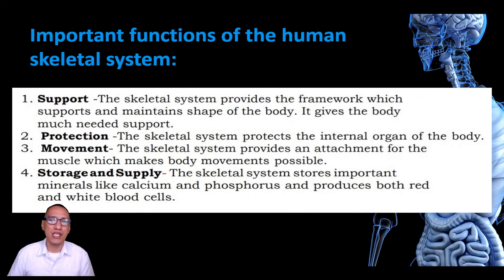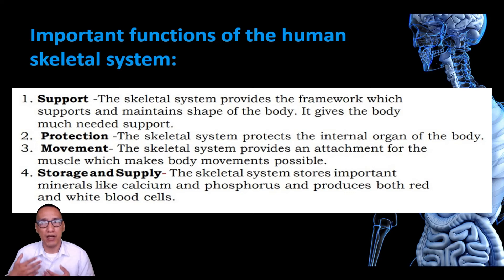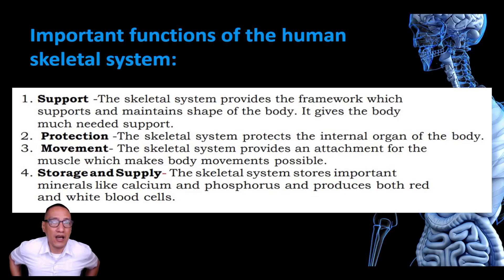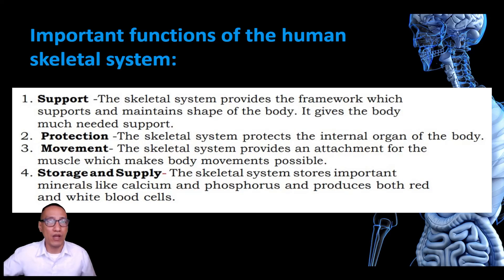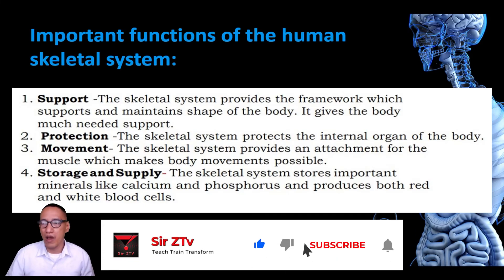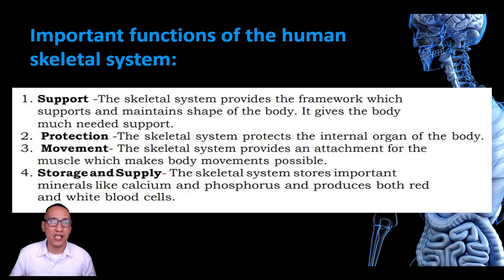Important functions of the human skeletal system: ito ay tumutulong sa atin sa pagsuporta, protection ng ating mga internal organs na maseselan — tulad ng brain, heart, lungs, at kahit yung kidney ay nakapasok sa loob ng rib cage. Movement — kung walang buto, hindi tayo makakagalaw. At storage and supply — doon natatago ang mga importanteng minerals katulad ng calcium at phosphorus, at doon din produced ang red and white blood cells na nagsu-supply sa buong katawan natin.